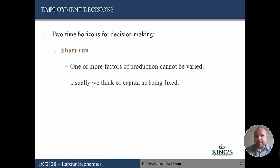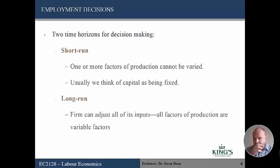For example, a pizzeria. In the short run, the size of its building or kitchen, and the number of ovens it uses, is fixed. It can vary its labor in the short run, but it cannot vary its capital. In the long run, we're thinking of a time period where all factors of production are variable. So any pizzeria in the long run can alter the size of their kitchen, the number of ovens they're using, etc.